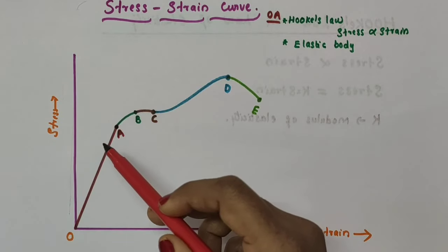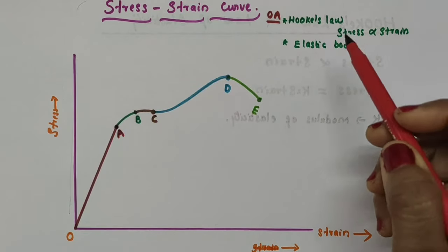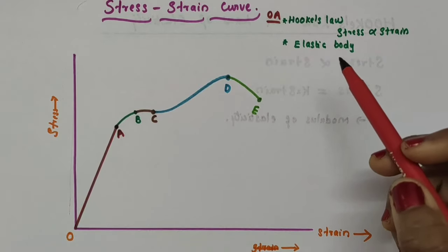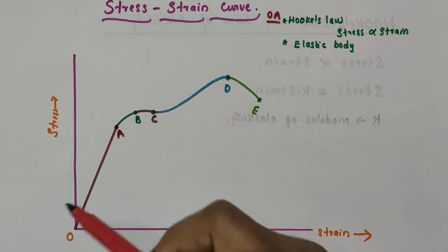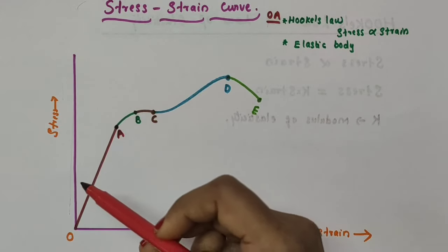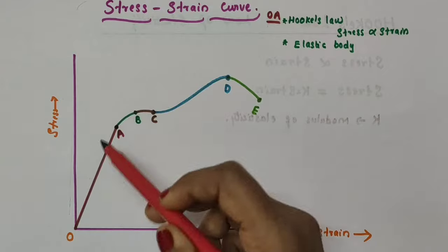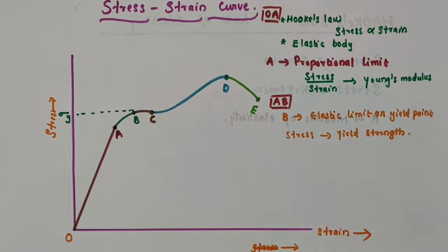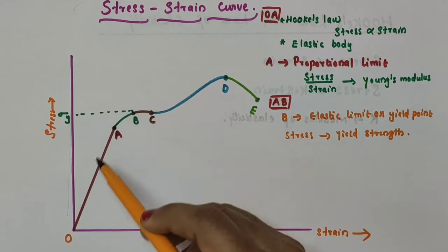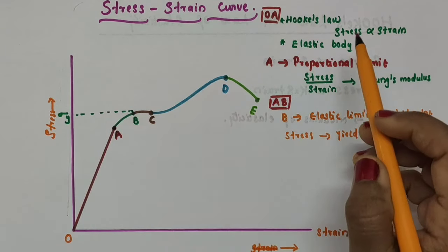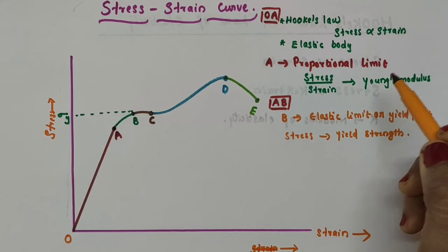Because it is a straight line, Hooke's law — that is, stress is proportional to strain — is obeyed in this region. In the region between O and A, the body regains its original dimensions (shape, size, etc.) when the applied force is removed. That is, a solid behaves as an elastic body in this region. Point A is called the proportional limit, because up to this limit stress is proportional to strain. The stress-to-strain ratio gives a proportionality constant known as Young's modulus, which we will discuss in our next video.